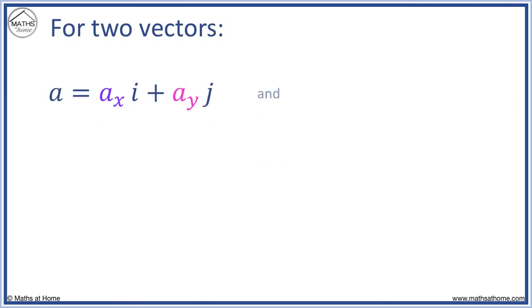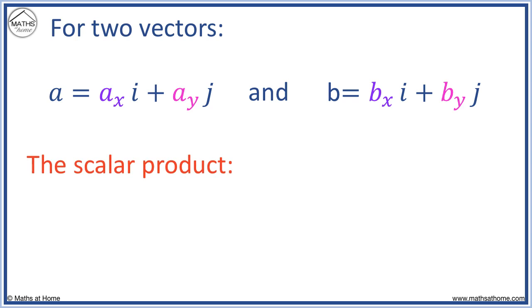For two vectors, A and B, the scalar product written A dot B is equal to AX BX plus AY BY.